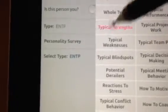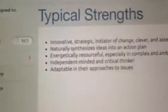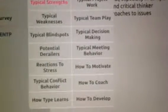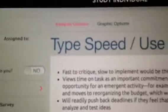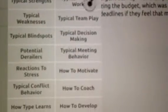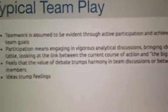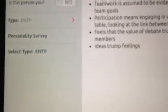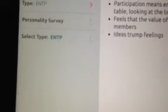We might also do some analytical things. For example, we can identify the typical strengths of our ENTP, what their typical time to getting things done looks like, and some helpful descriptors. We can also think about how they typically work on a team and what we might see in their particular team behavior. So there are many options once this information is entered.